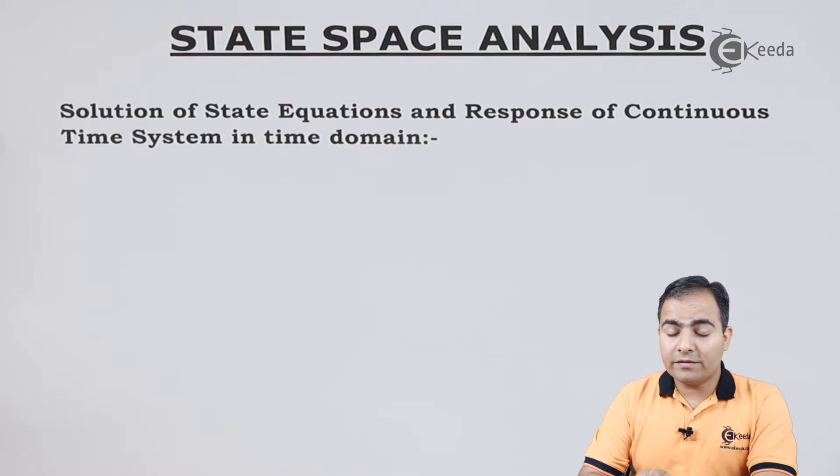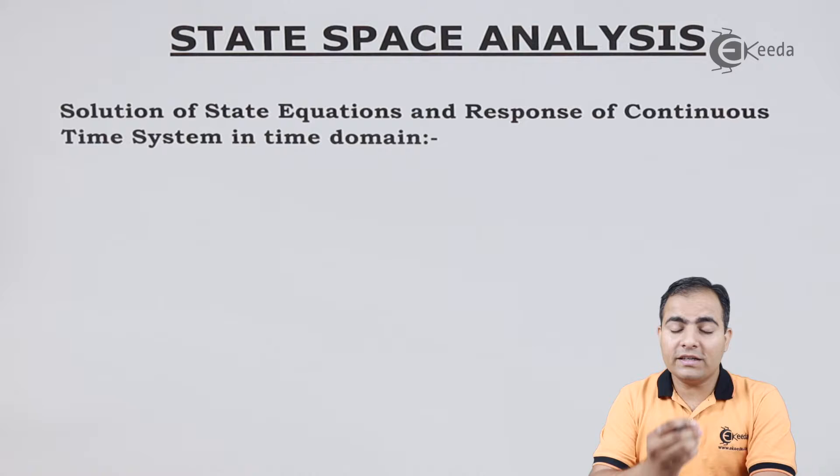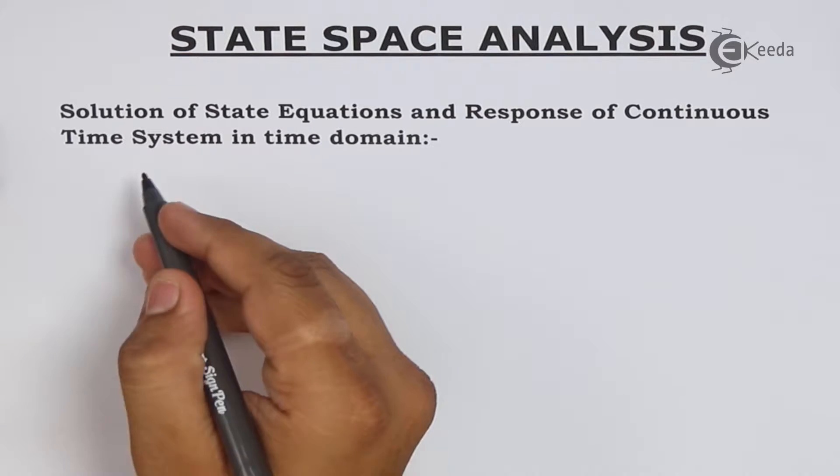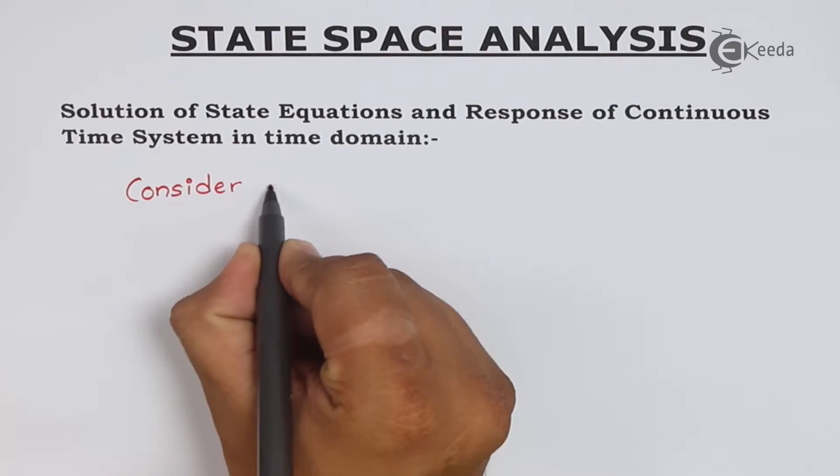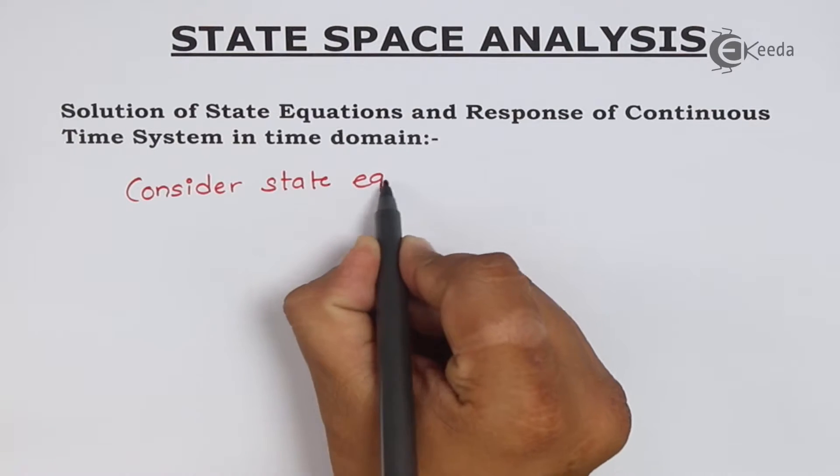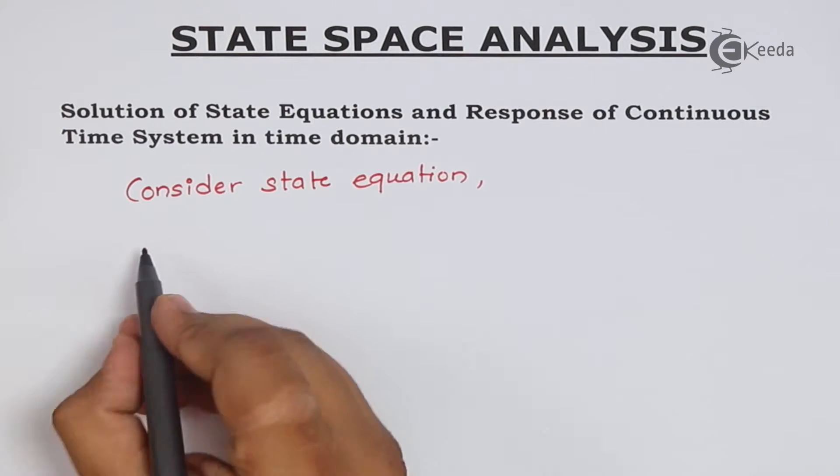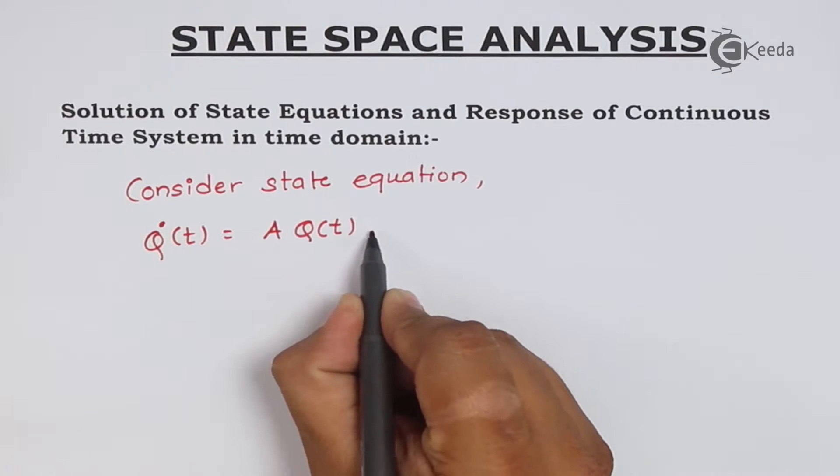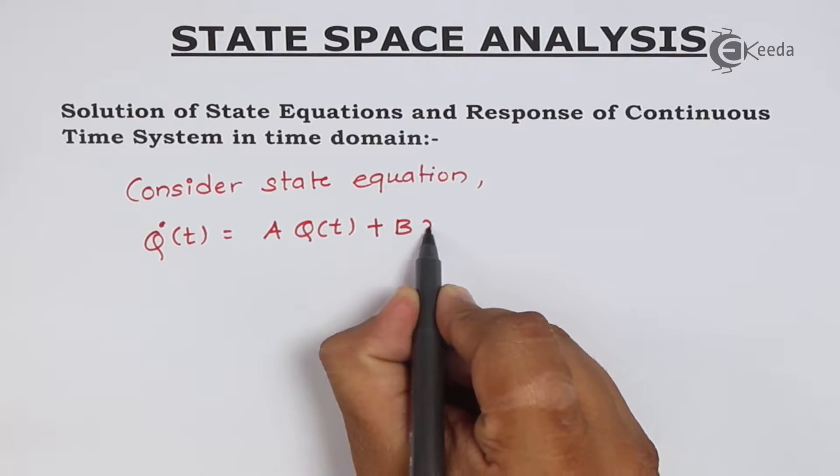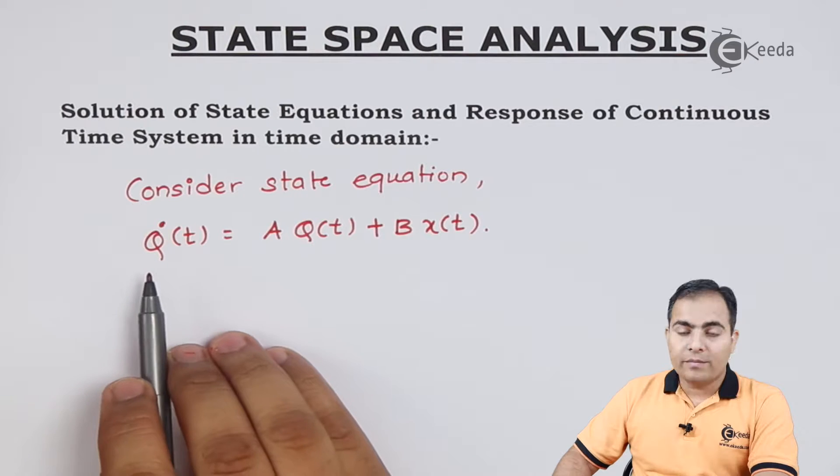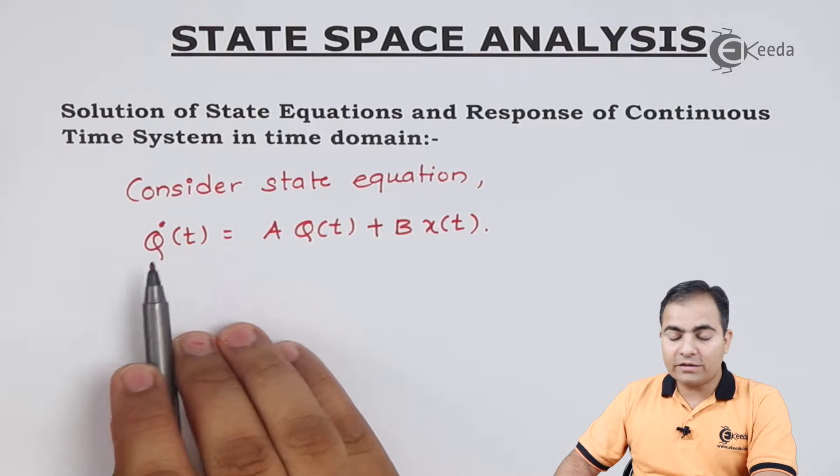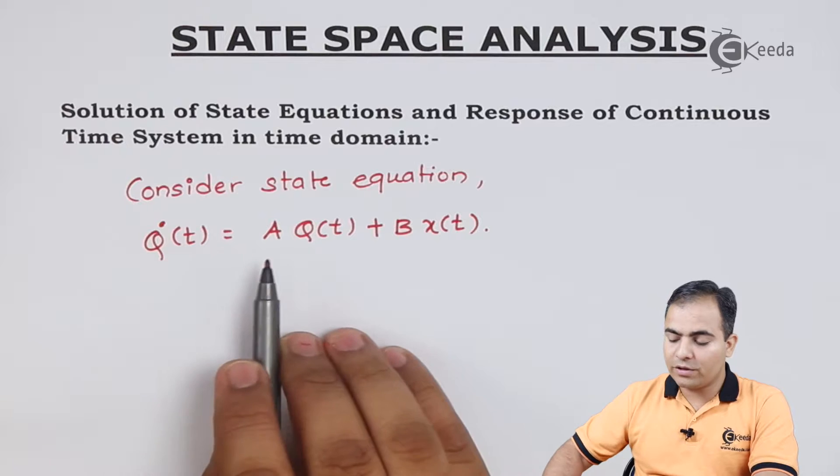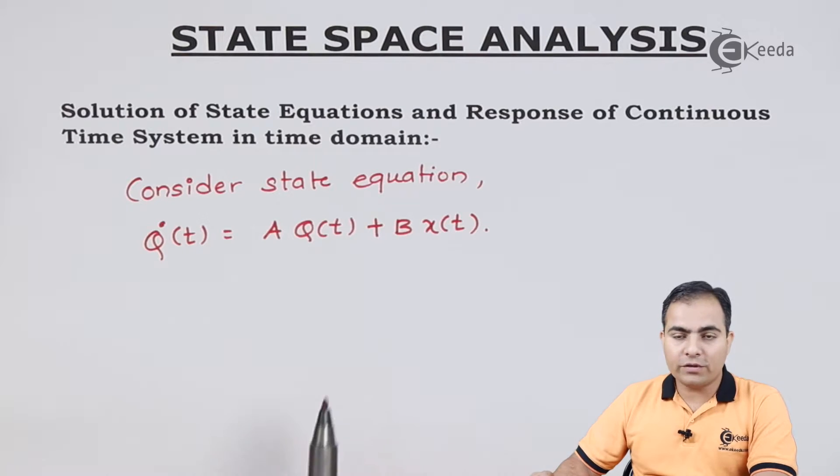We will start from a state equation of input, or simply the input state variable model. My equation is q'(t), that is first order differentiation of state vector q'(t) equals Aq(t) plus Bx(t).